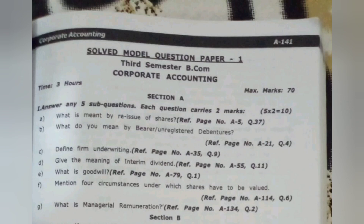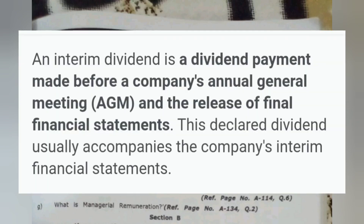Interim dividend is when the company gives a dividend before the annual general meeting and before the release of the financial statement. This declared dividend usually accompanies the company's interim financial statement. It is a payment given before the company's general meeting.